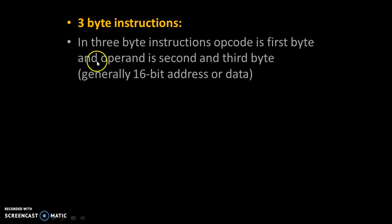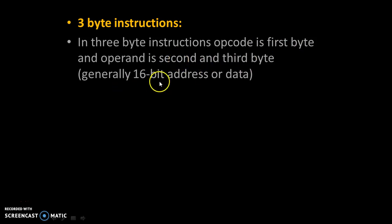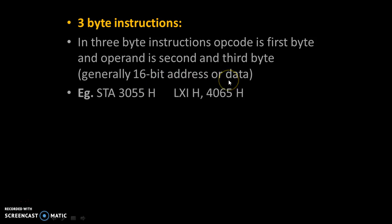3-byte instructions: In 3-byte instructions, the opcode is the 1st byte and the operand occupies the 2nd and 3rd bytes. Generally this is a 16-bit address or 16-bit data.